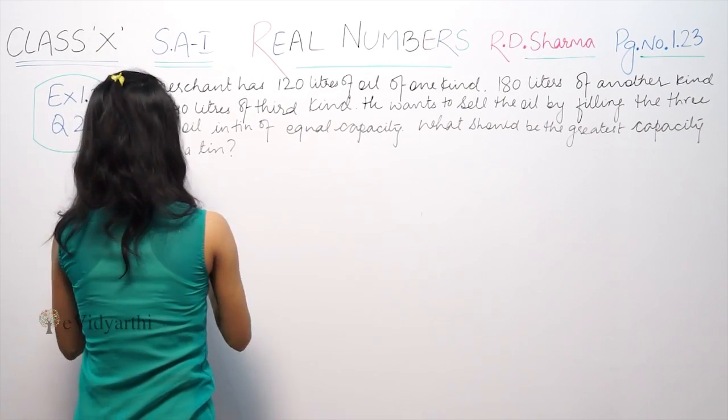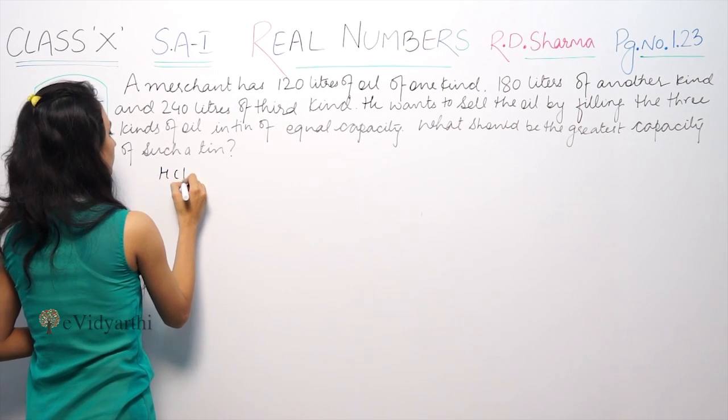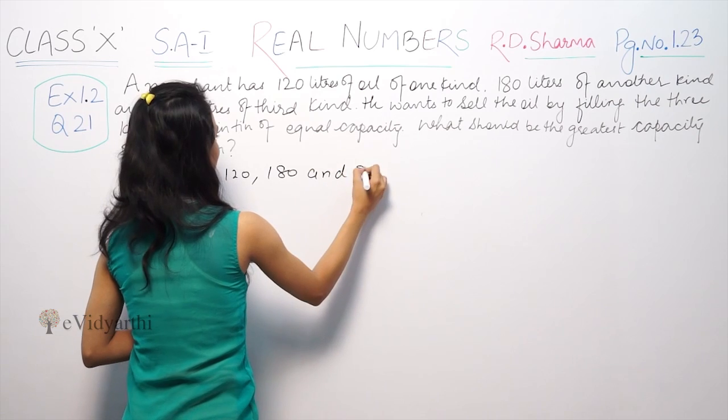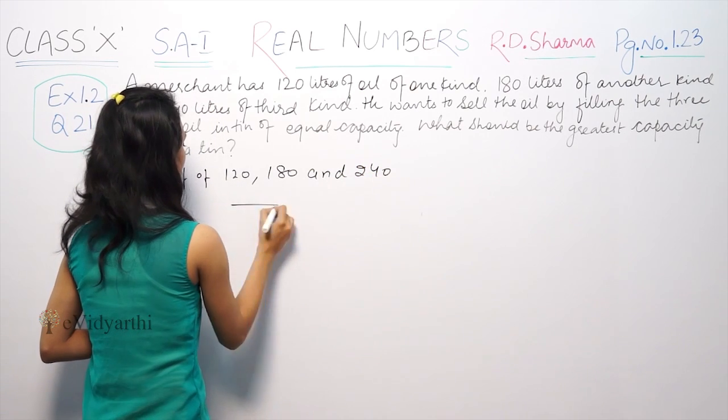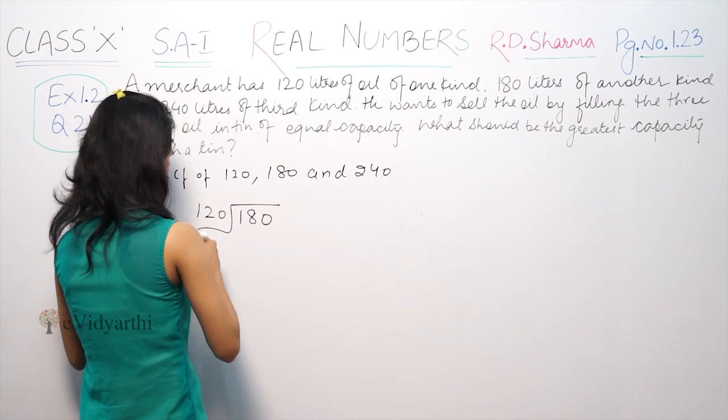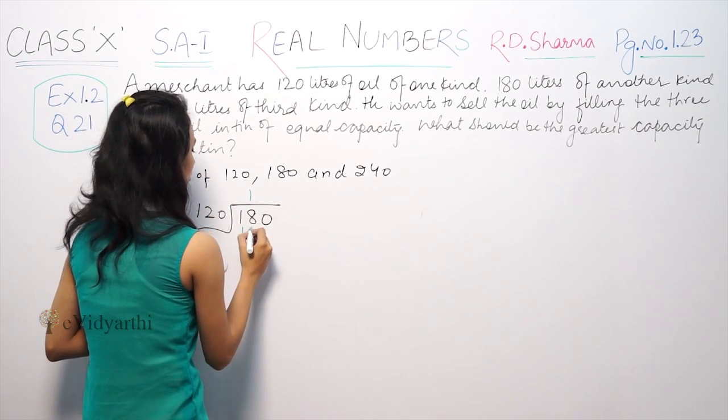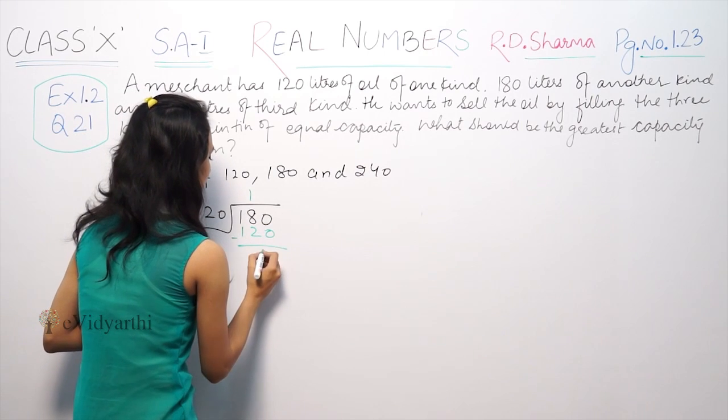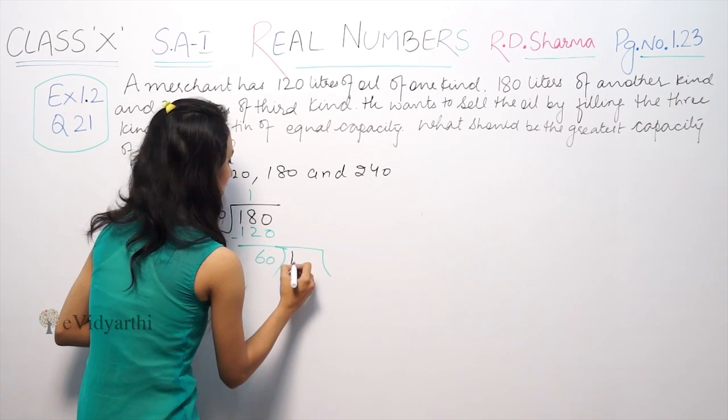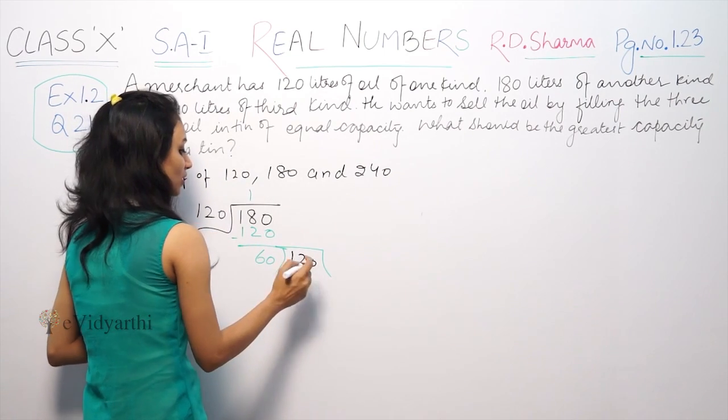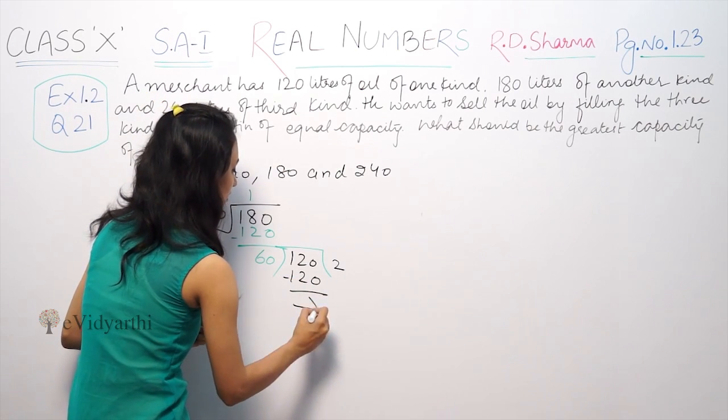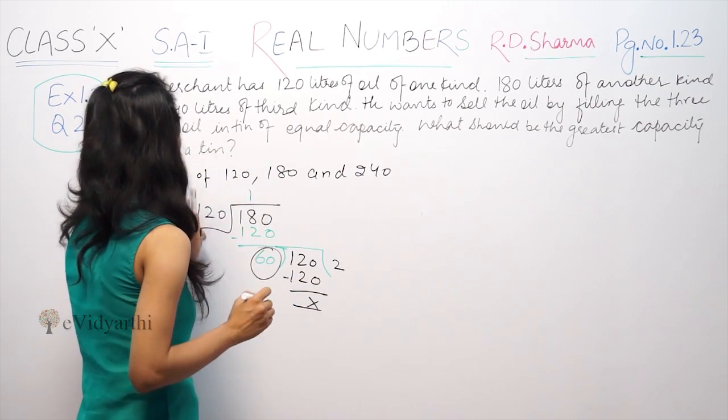HCF of 120, 180, and 240. 180 is the greater number than 120. So we find the HCF: 180 minus 120 equals 60. So 60 is the HCF of 120 and 180.